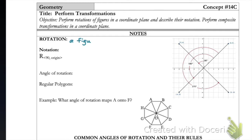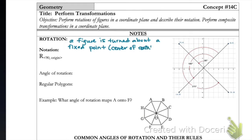A rotation is when a figure is turned about a fixed point, which we are going to call the center of rotation. The angle of rotation is the number of degrees a figure is rotated.